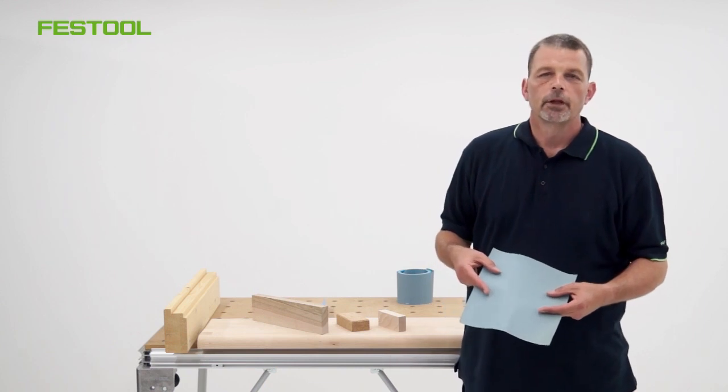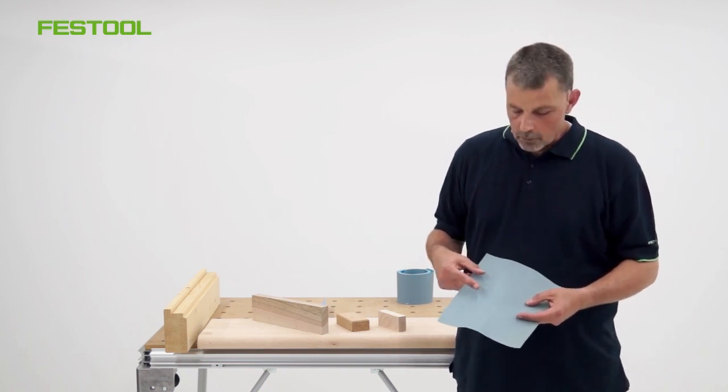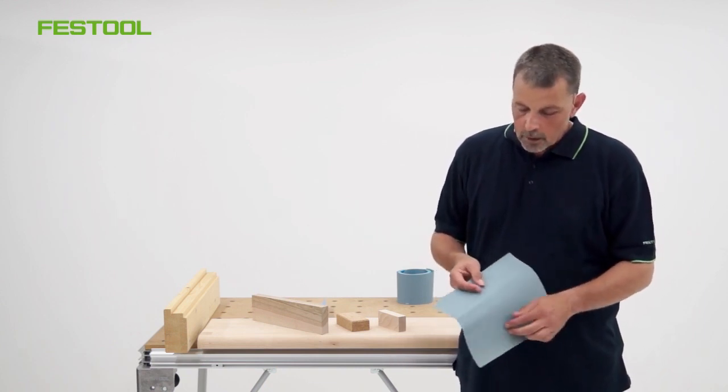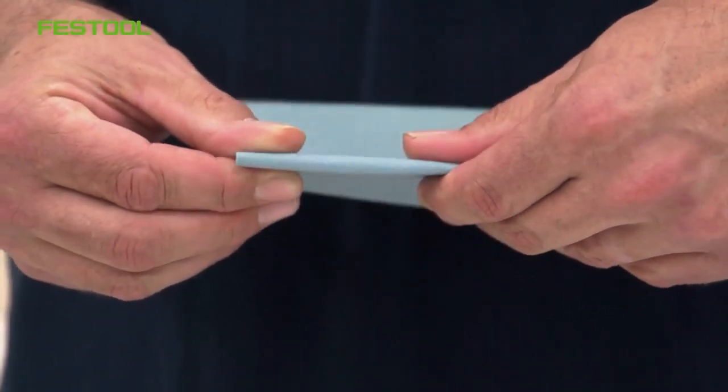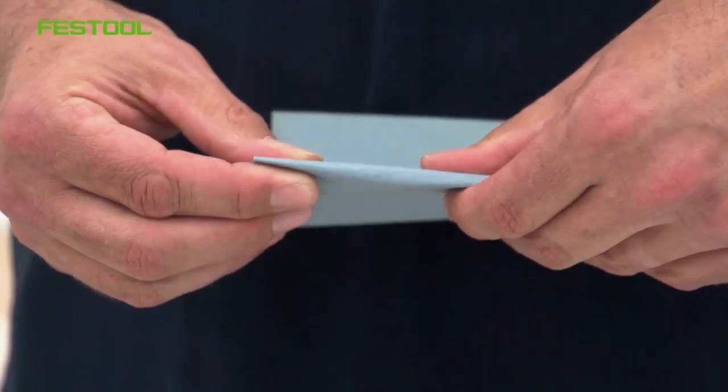So this type of hand sanding sheet which is Granat means I have really good flexibility, and along these lines when I start to fold this around my block, I don't have any breakout of the grains along this crease line.